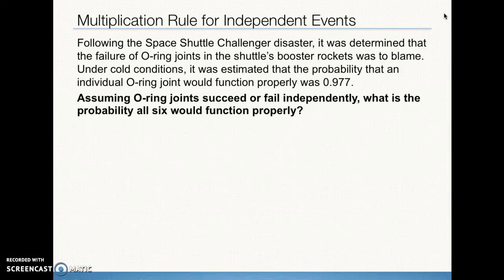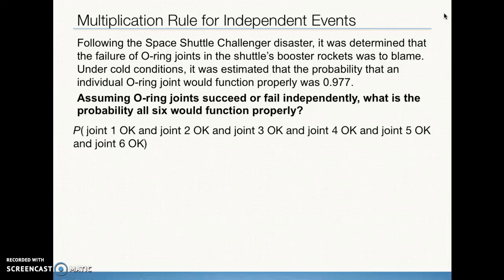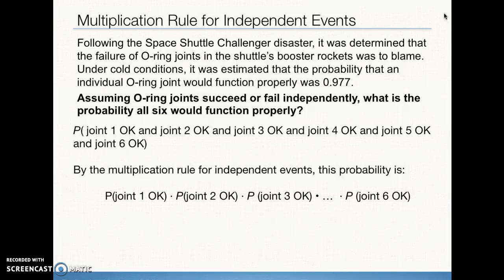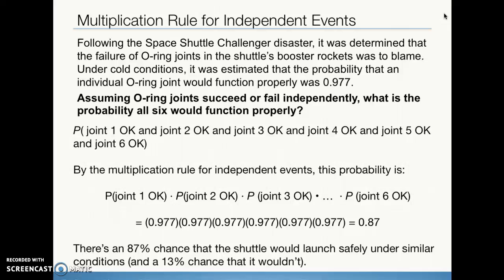We have this example, this is in our textbook on page 329. Following the space shuttle Challenger disaster, it was determined that the failure of O-ring joints in the shuttle's booster rockets was to blame. Under cold conditions, it was estimated that the probability of an individual O-ring joint would function properly was 0.977. If all O-ring joints either succeeded or failed independently, what's the probability that all six would function properly? And that is an AND probability. It means they all have to be okay. And we multiply those if they're independent events. So we end up with a probability of all six working properly of 0.87. This means that there's a 13% chance that something would go wrong with one of the O-ring joints.